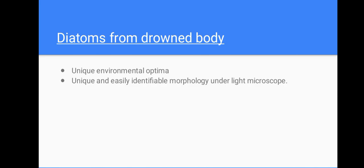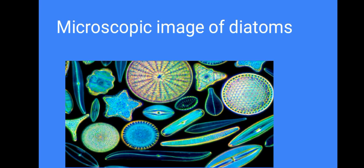Let's look at diatoms from drowned bodies. Diatoms are microscopic, unicellular, photosynthesizing algae present in all aquatic habitats. They're made of silica and less than 200 microns in size. It's important to note that there are thousands of different species of diatoms, which have unique environmental optima. They also have unique and easily identifiable morphology, which can be observed under a light microscope. Images show diatoms appear in different shapes and sizes.